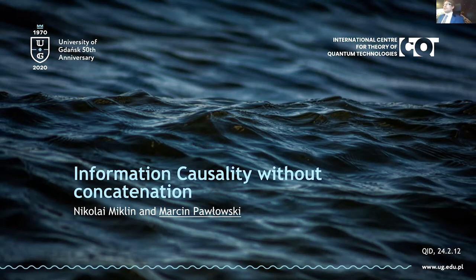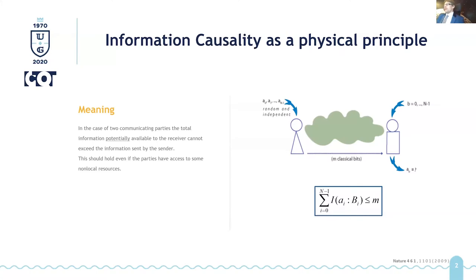So information causality is a principle that we propose in this paper referenced at the bottom of the screen and it's a very natural information theoretic principle. Basically it means that if there are two communicating parties the total information potentially available to the receiver cannot exceed the whole information sent by the sender.